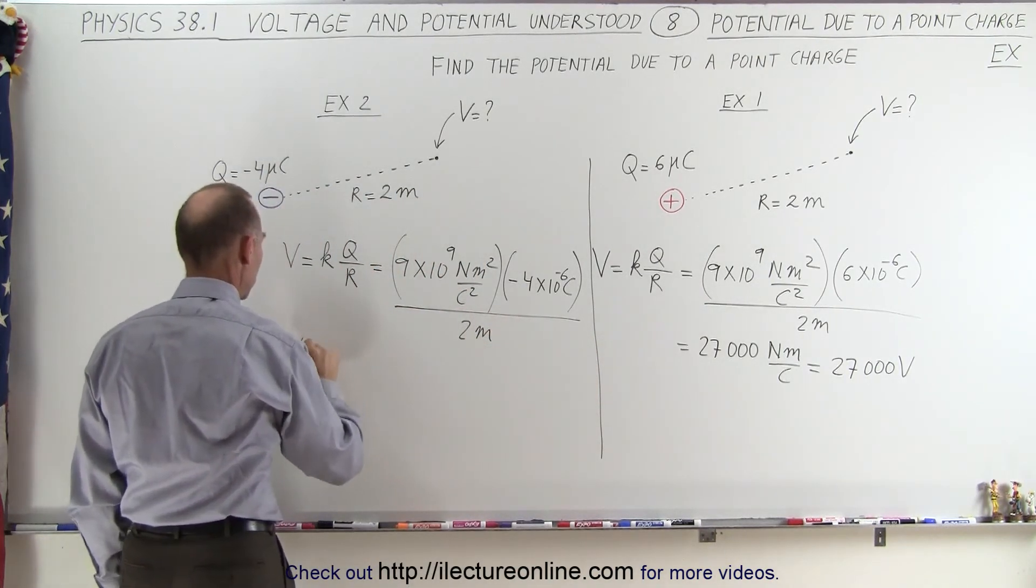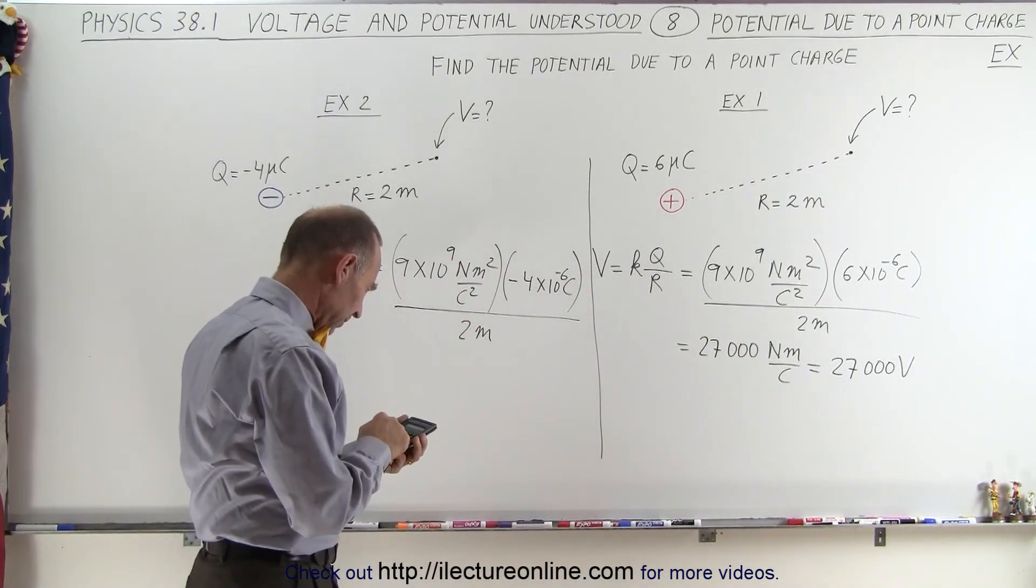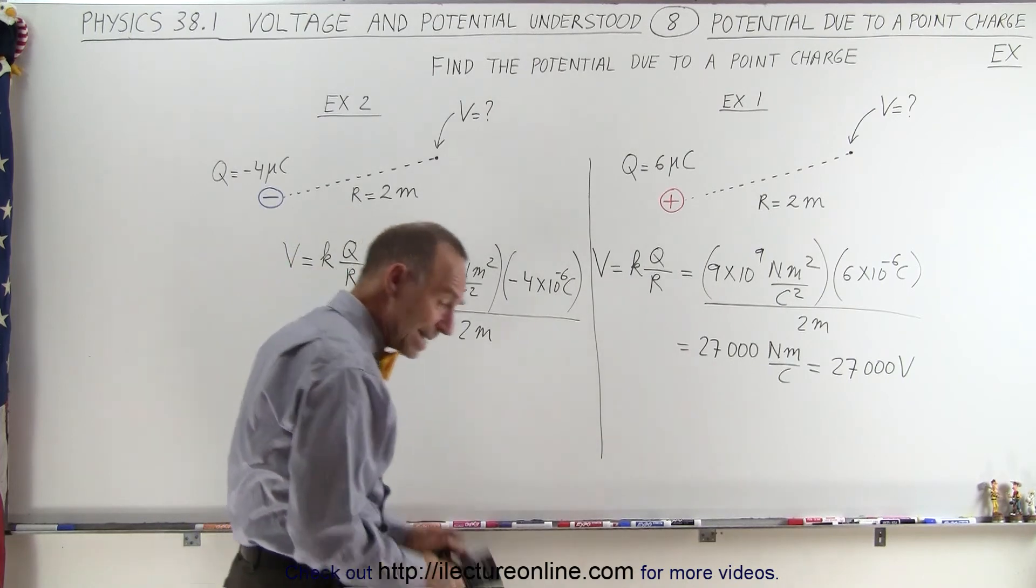Which V is going to be equal to, and let's see here, that's 9 times 4, that would be 36 divided by 2, so 18,000.